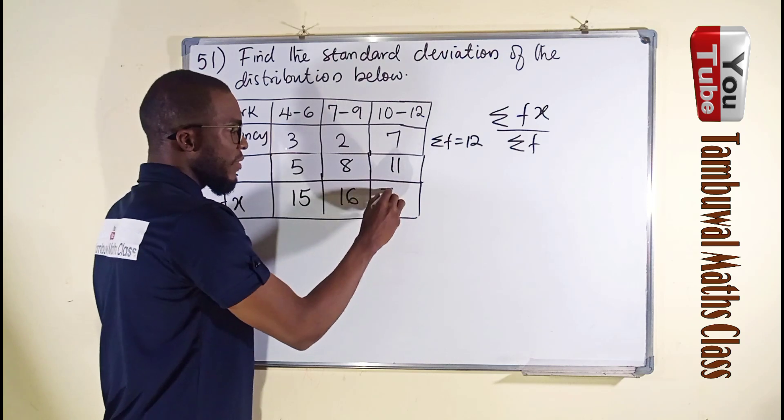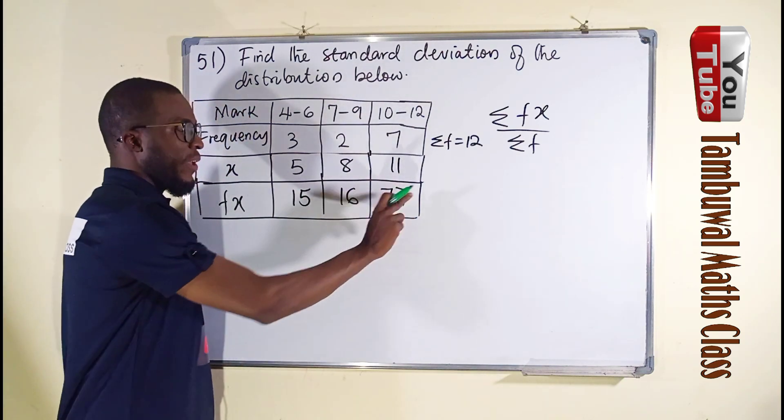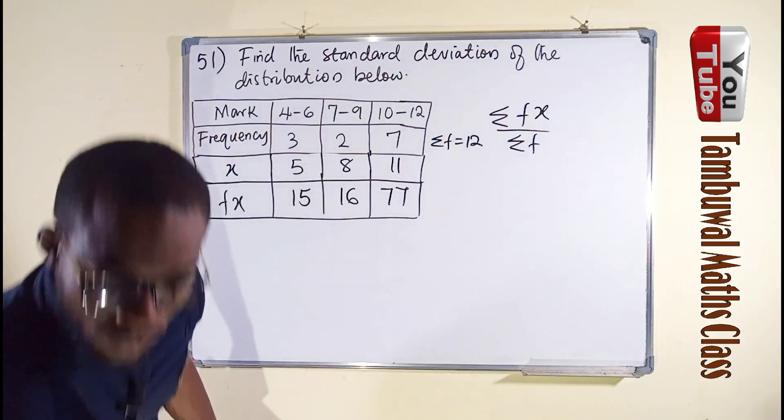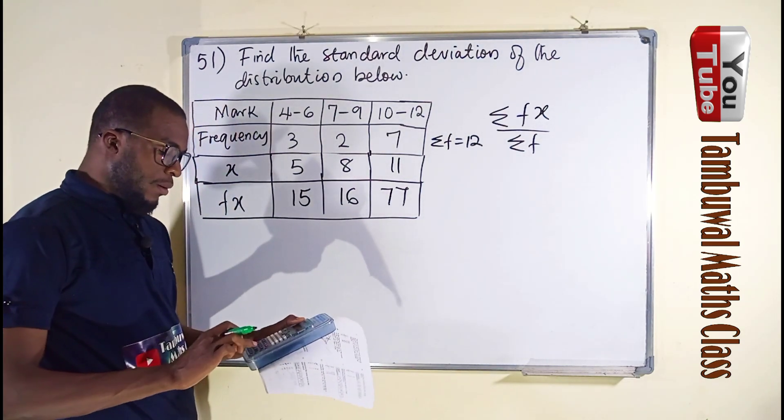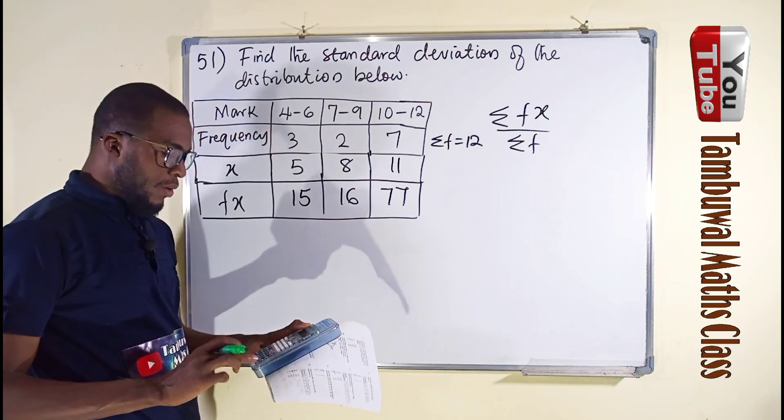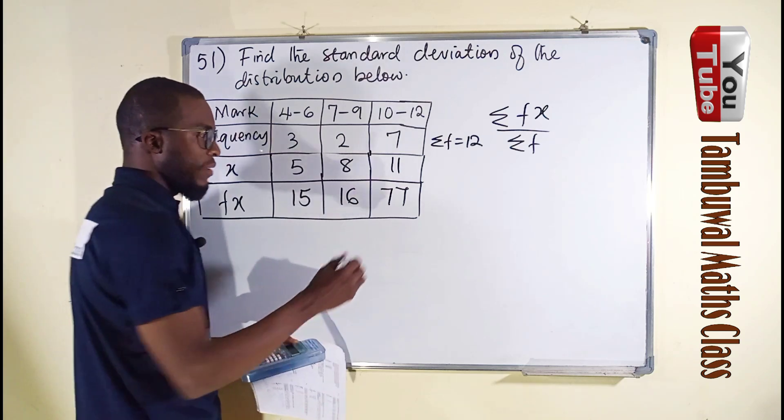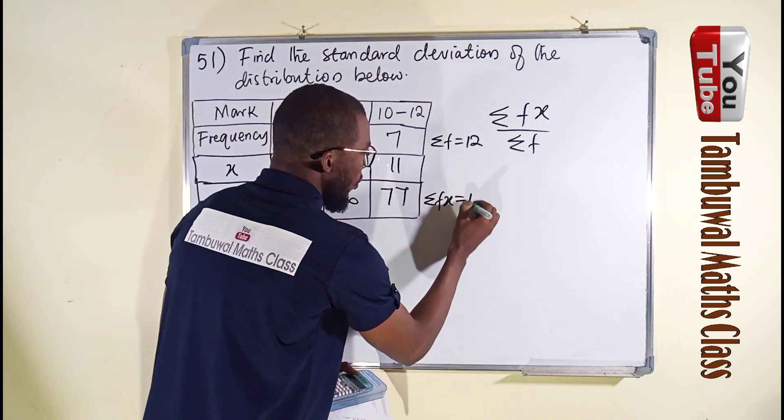7 times 11 is 77. Now let us take the sum of fx, 15 plus 16 plus 77, we have 108. So summation of fx equal to 108.